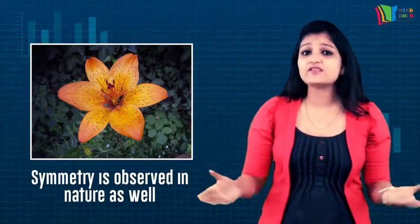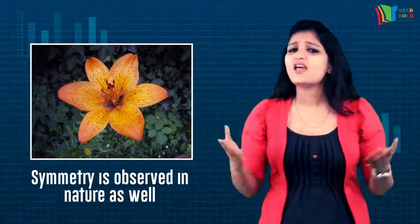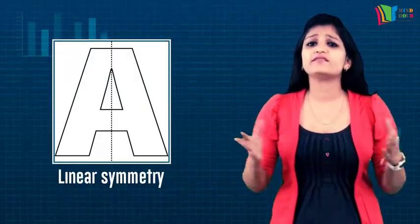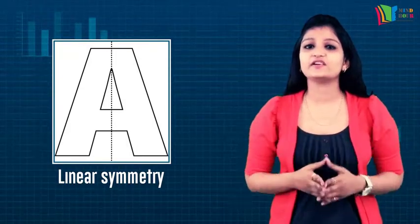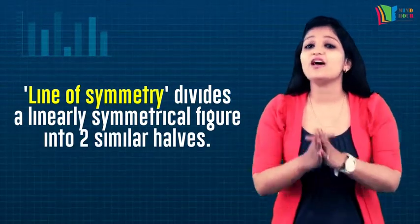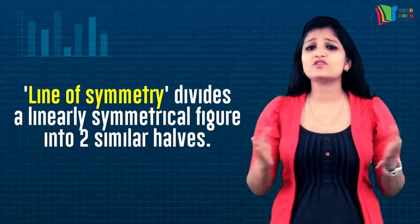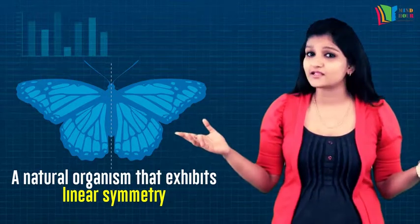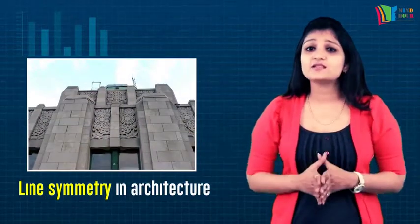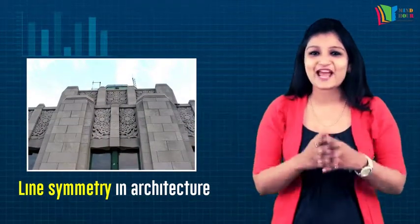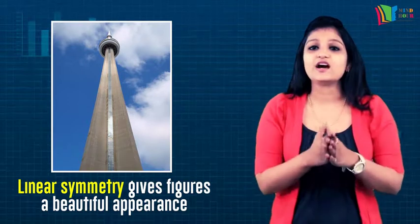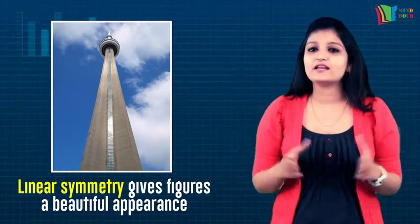Flowers, tree leaves, religious symbols, rugs, and handkerchiefs — everywhere you find symmetrical designs. If a line can be drawn dividing a figure into two equal halves, then the figure is said to be symmetrical about that line. This line is called the line of symmetry or axis of symmetry. We can find examples of objects showing line symmetry in nature — for example, a butterfly, some leaves, and flowers show line symmetry. Examples of line symmetry can also be found in many ancient and modern buildings. Objects that show line symmetry appear more balanced and beautiful.